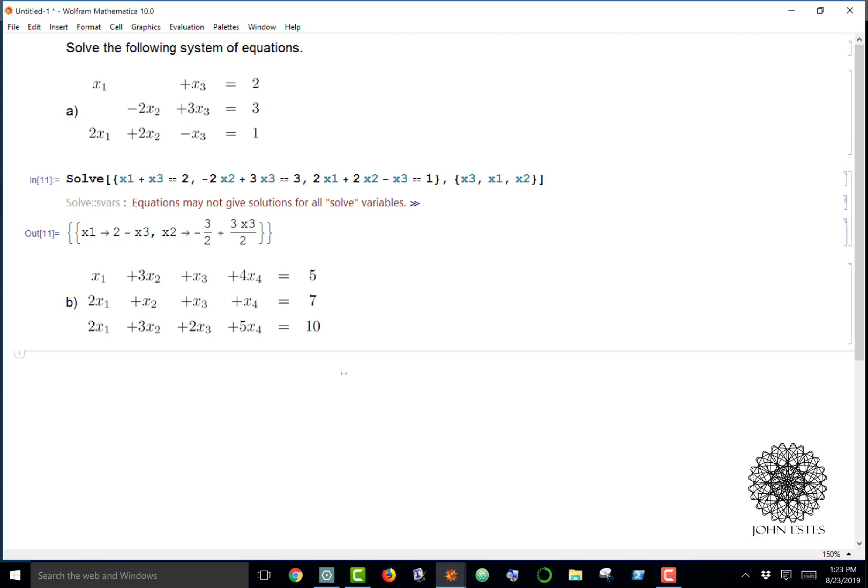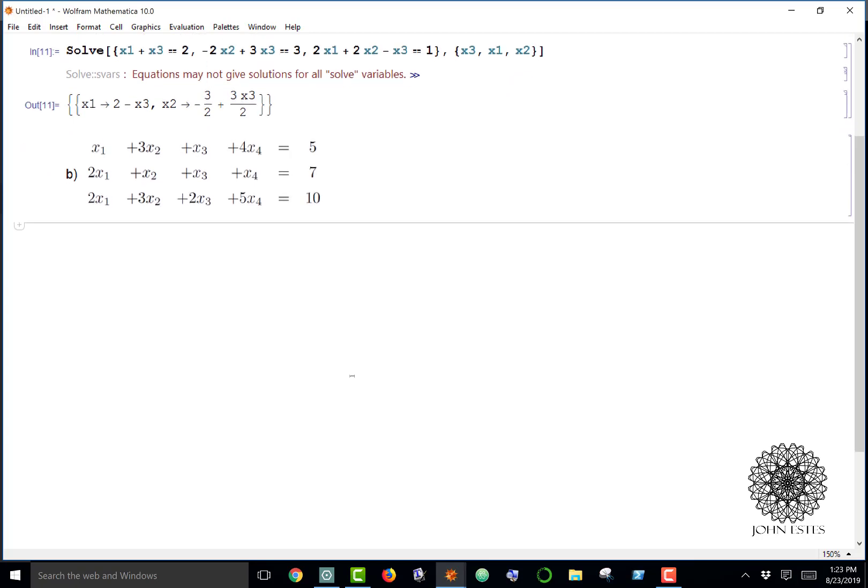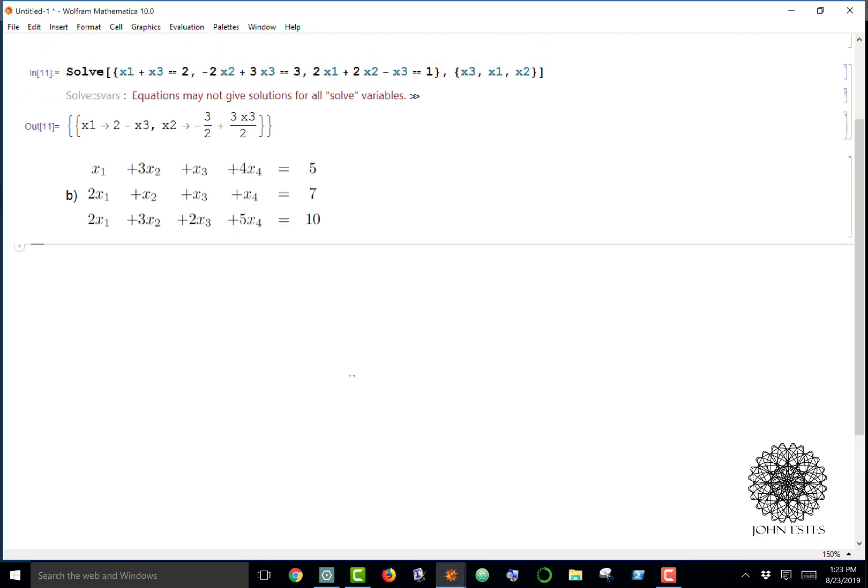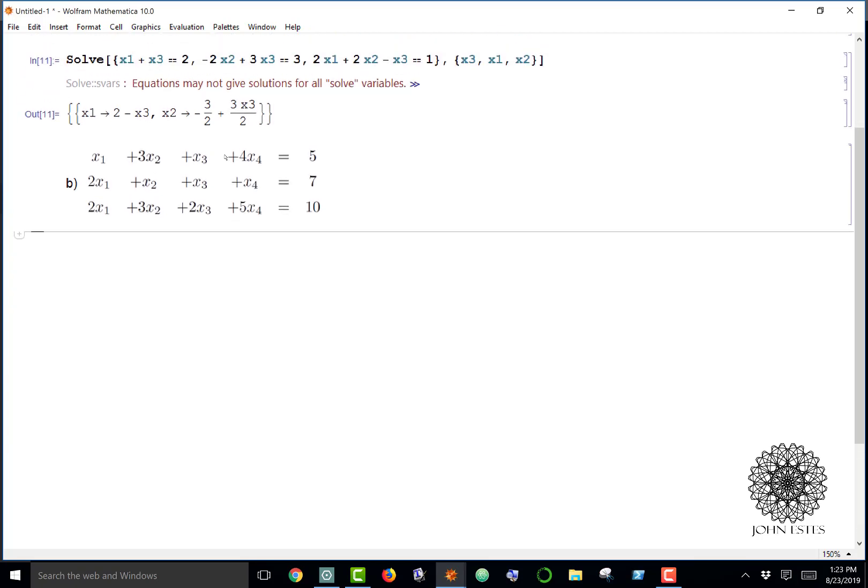Now for part B, I have four variables and three equations. Because of that, I know this is going to be parametric as well, unless it's an inconsistent system. But this time I don't want to use the solve function because I didn't like writing all the x1's and stuff.